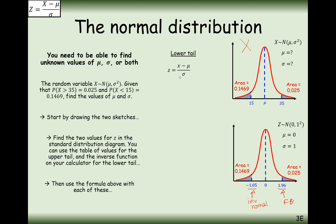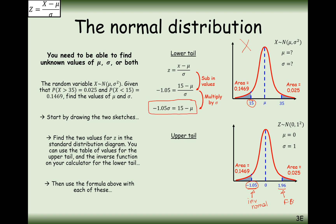We now create simultaneous equations — one from the lower tail and one from the upper tail. The probability of X less than 15 corresponds to Z equal to minus 1.05, so substituting into the formula and multiplying up by sigma gives equation 1: minus 1.05 sigma equals 15 minus mu. From the upper tail, 35 corresponds to Z equal to 1.96, giving equation 2: 1.96 sigma equals 35 minus mu.